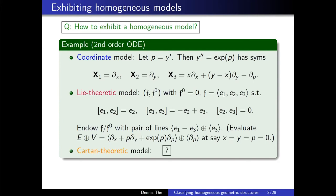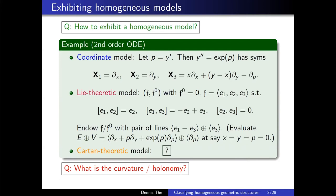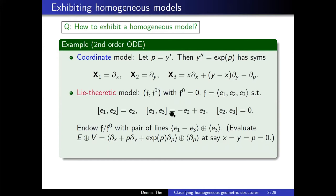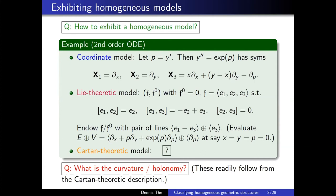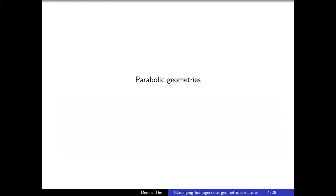A third way — which is what we're getting to today — is the Cartan-theoretic perspective. Why would you want this? There are natural questions that the first two perspectives make harder. We know any second order ODE can be described as a Cartan geometry with a notion of curvature. Given this homogeneous data, what is the curvature? What is the holonomy? If you just look at those two perspectives as presented, it's not obvious how to proceed. But these notions can be computed, and they readily follow from the Cartan-theoretic perspective. So let's go into more details about parabolic geometries.